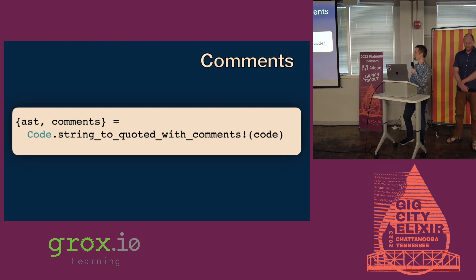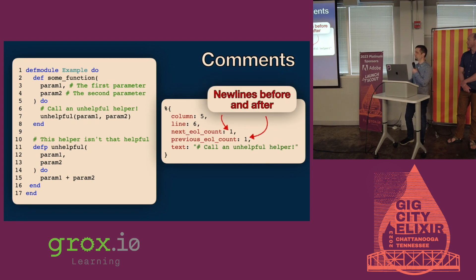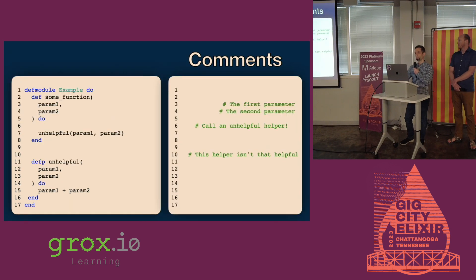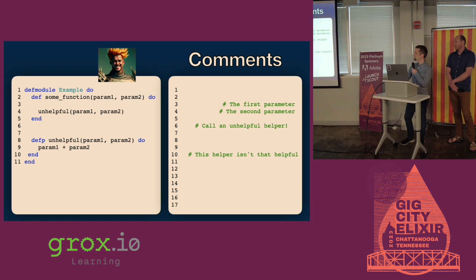Elixir also has this other function, string_to_quoted_with_comments, so then you get your AST and the comment metadata. The comment metadata similarly has the line numbers, whether or not it has a new line before or after it, and how many new lines. This is kind of what the code looks like to Elixir when you do string_to_quoted_with_comments — you get the AST, which knows which lines it's on, but then the comments are a separate data structure. So we wanted Styler to handle this, but that's where you can see how the comments got all messed up — if you merged those back together, they wouldn't be where you wanted them anymore.